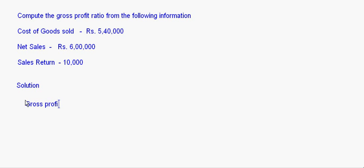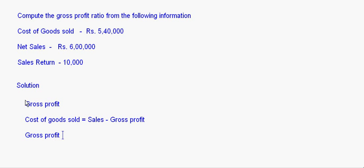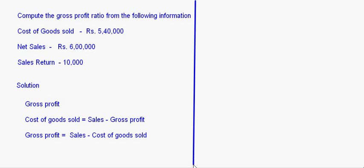We have the formula: cost of goods sold equals sales minus gross profit. From this, gross profit equals net sales minus cost of goods sold. So gross profit equals 6 lakhs minus 5,40,000, which comes to 60,000.